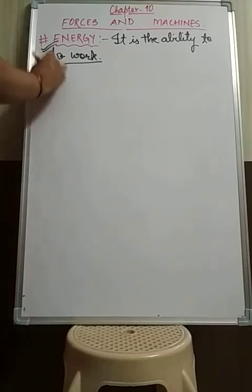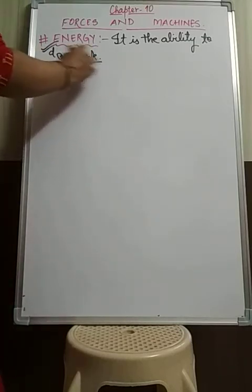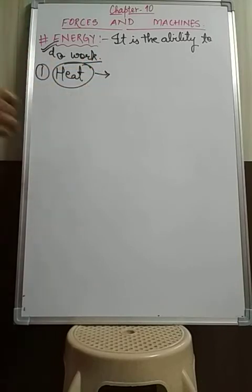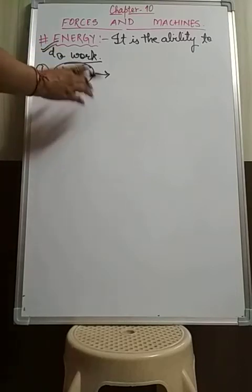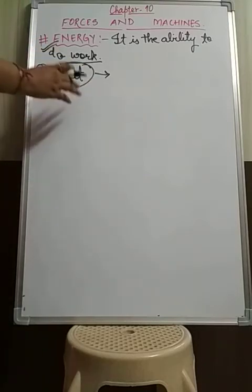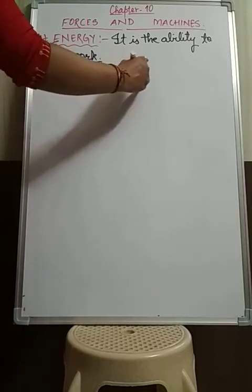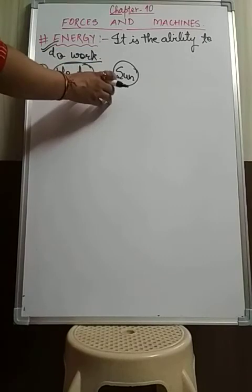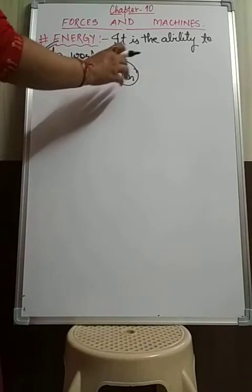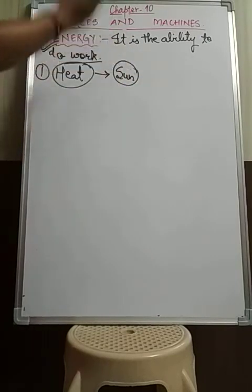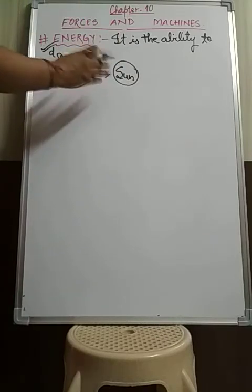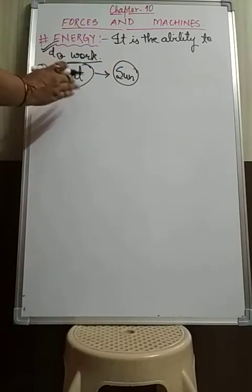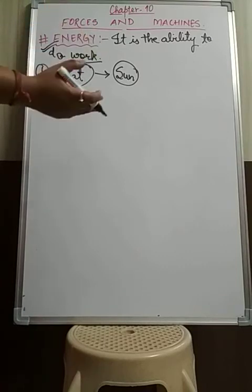The first form of energy is heat energy, and it is one of the most important forms of energy. Majorly, heat energy is given by the sun — the sun is the ultimate source of heat energy. Apart from the sun, we also get heat energy from different sources.